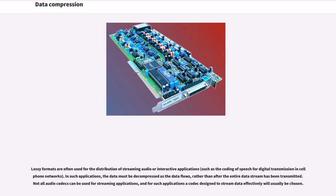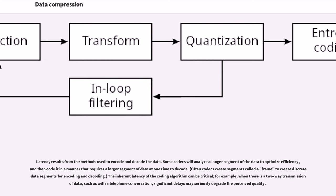Lossy formats are often used for the distribution of streaming audio or interactive applications, such as the coding of speech for digital transmission in cell phone networks. In such applications, the data must be decompressed as the data flows, rather than after the entire data stream has been transmitted. Not all audio codecs can be used for streaming applications, and for such applications a codec designed to stream data effectively will usually be chosen. Latency results from the methods used to encode and decode the data. Some codecs will analyze a longer segment of the data to optimize efficiency, and then code it in a manner that requires a larger segment of data at one time to decode. Often codecs create segments called a frame to create discrete data segments for encoding and decoding.